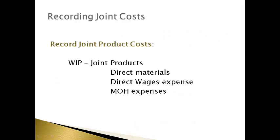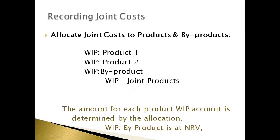Recording joint costs requires three journal entries. The first journal entry moves all product costs into work-in-process joint products, which is a temporary holding account. The costs in work-in-process joint products will be allocated and moved to individual product work-in-process accounts. An allocation method is chosen and the amounts allocated to each product are recorded to each individual product's work-in-process account. Amounts are also recorded to a work-in-process account for byproducts if the company always sells them. Products are items consistently sold to regular end-user customers, while byproducts are consistently sold to another company to be used as a direct material.